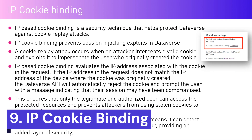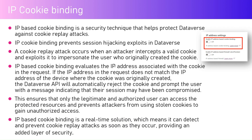IP cookie binding protects Dataverse against cookie replay attacks. When you log into a system you receive a cookie containing authentication information for the connection between Microsoft 365 and the Power Platform network. If that cookie is taken from your system and pasted into a different system, this setting will invalidate the IP address and flag the action to the user. It's a real-time solution that detects and prevents cookie replay attacks as soon as they occur, providing an added layer of security.